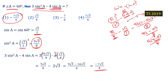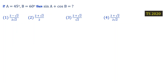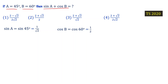Now let's solve a similar problem. If A equals 45 degrees and B equals 60 degrees, then what is the value of sinA plus cosB? Sin 45 degrees from the trigonometric ratio table is 1 by root 2, and cos 60 degrees is 1 by 2.